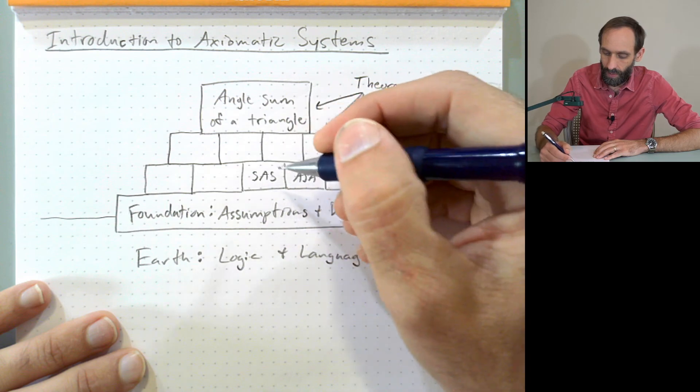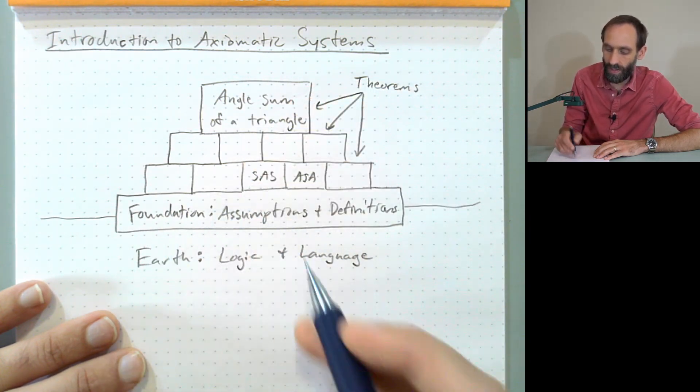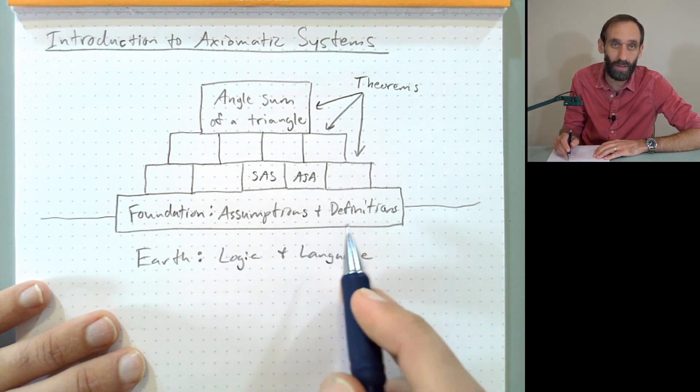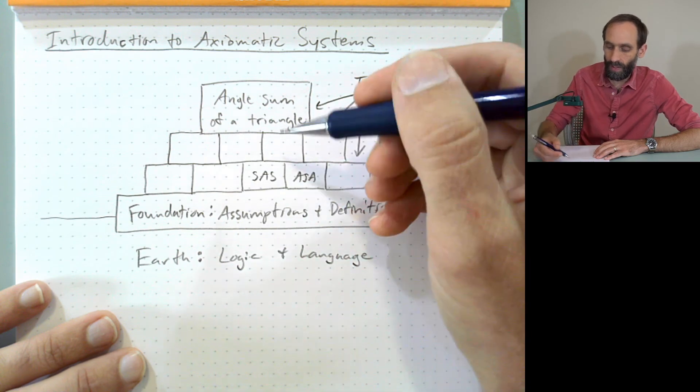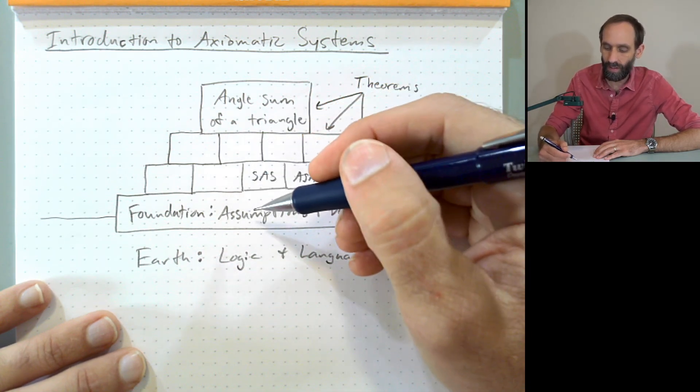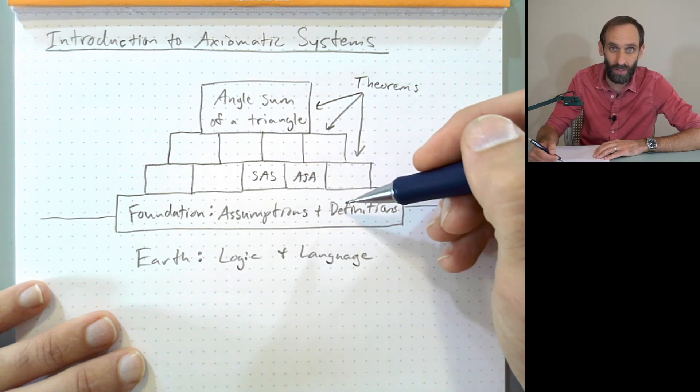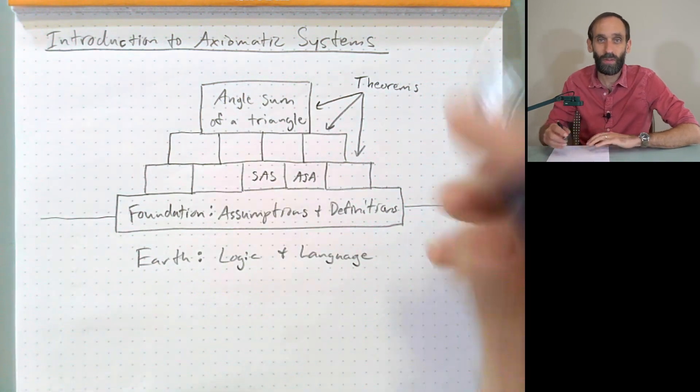And using a theorem that you haven't proved to prove a theorem and then prove that theorem, that's circular reasoning. So we start by taking these assumptions. And so our first theorems have to be based only on these assumptions and definitions using the tools of logic and language. And as we're building the structure, proving theorems based on theorems based on theorems based on the assumptions and definitions, we're doing it all using these two tools of logic and language.